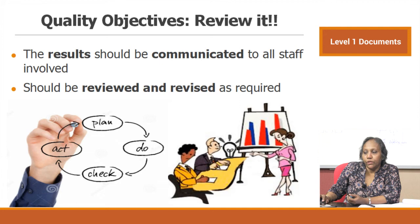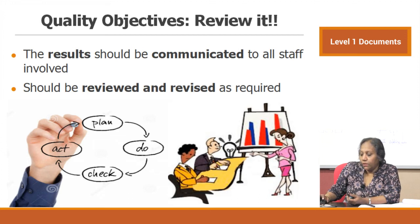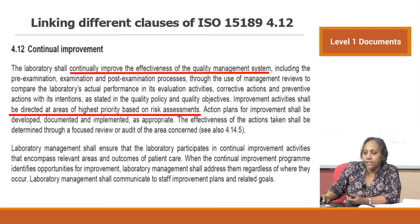Set quality objectives, make them measurable by capturing the number of times an incident or non-conformance occurs, and then review. Results should be communicated to all staff, and objectives should be reviewed and revised. This is how quality objectives become part of the Plan-Do-Check-Act cycle: you plan, you do, while checking you find mistakes, and therefore you reset your goals — that is the act part of PDCA.